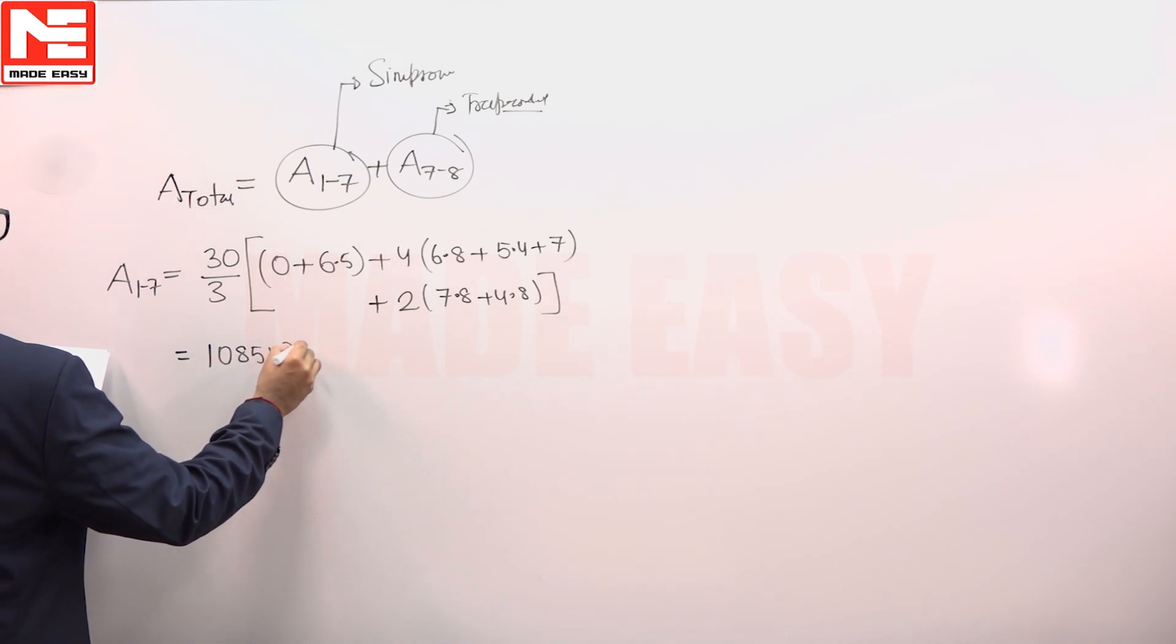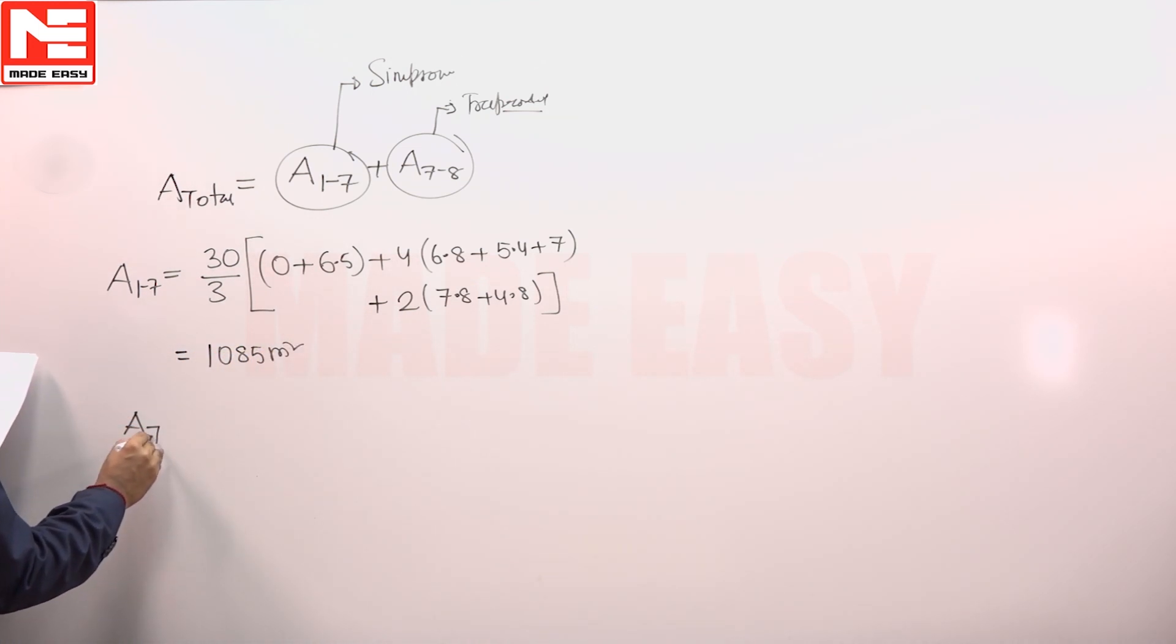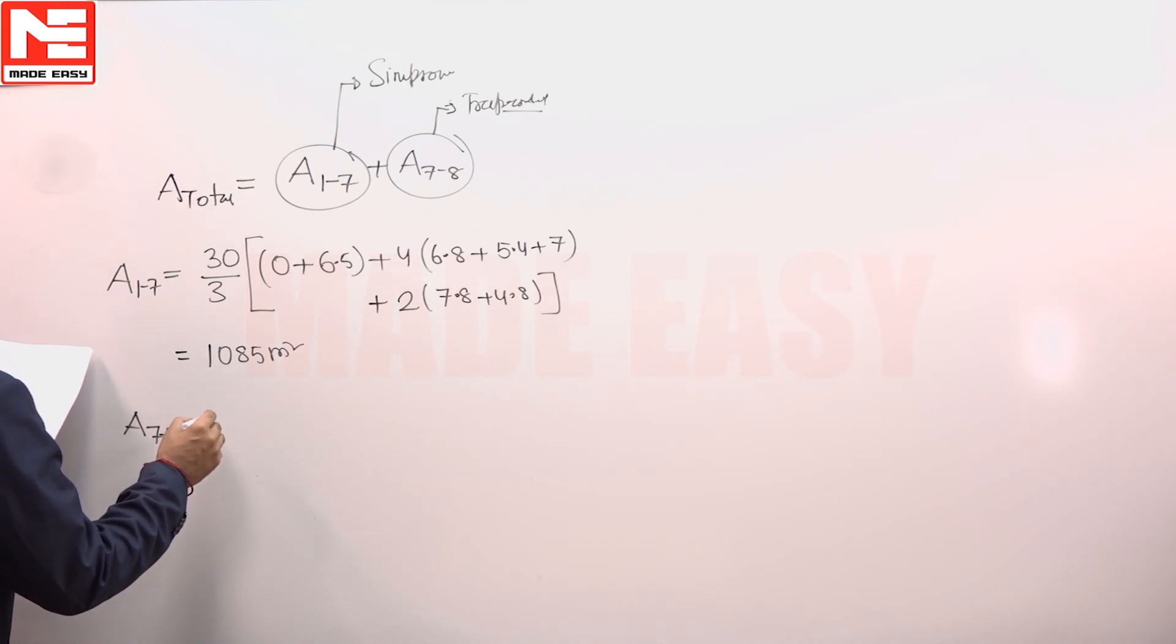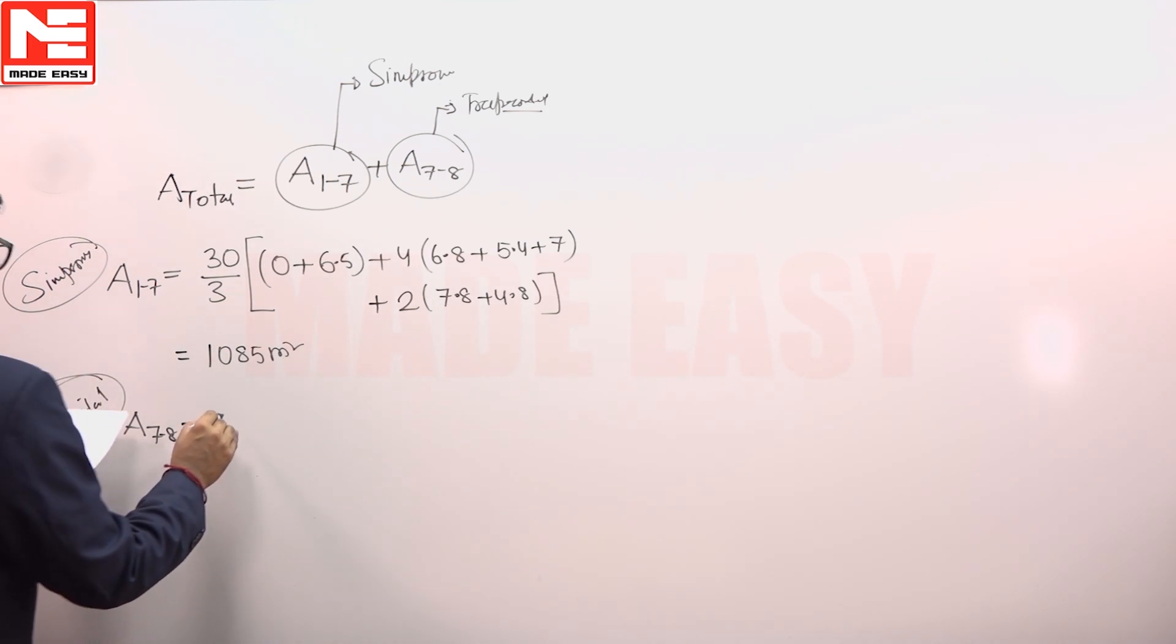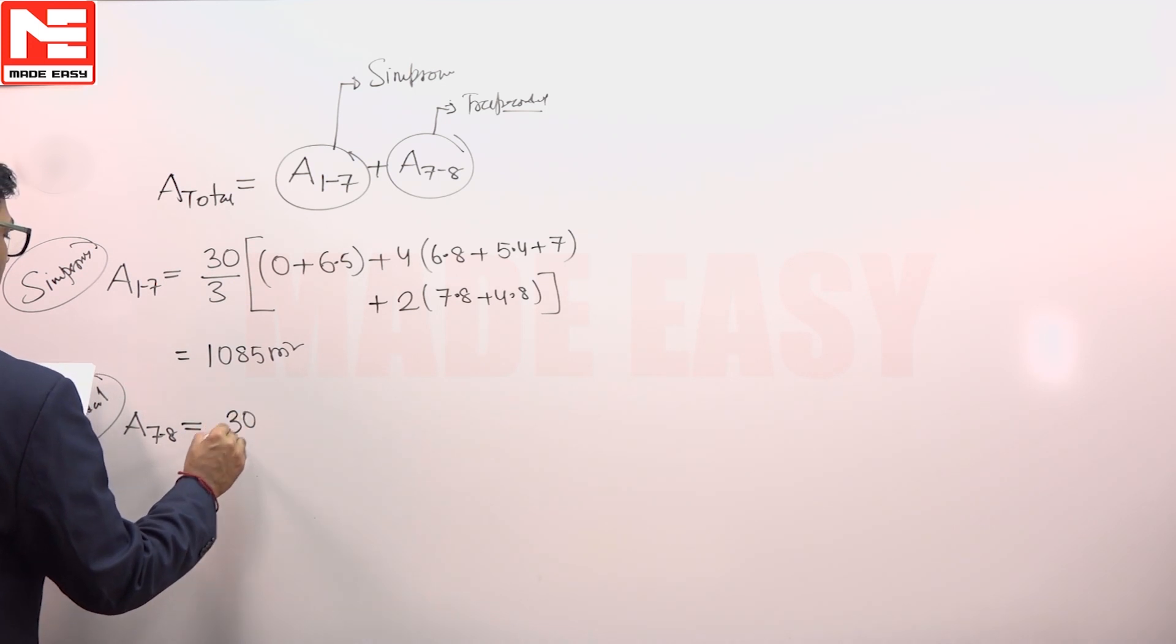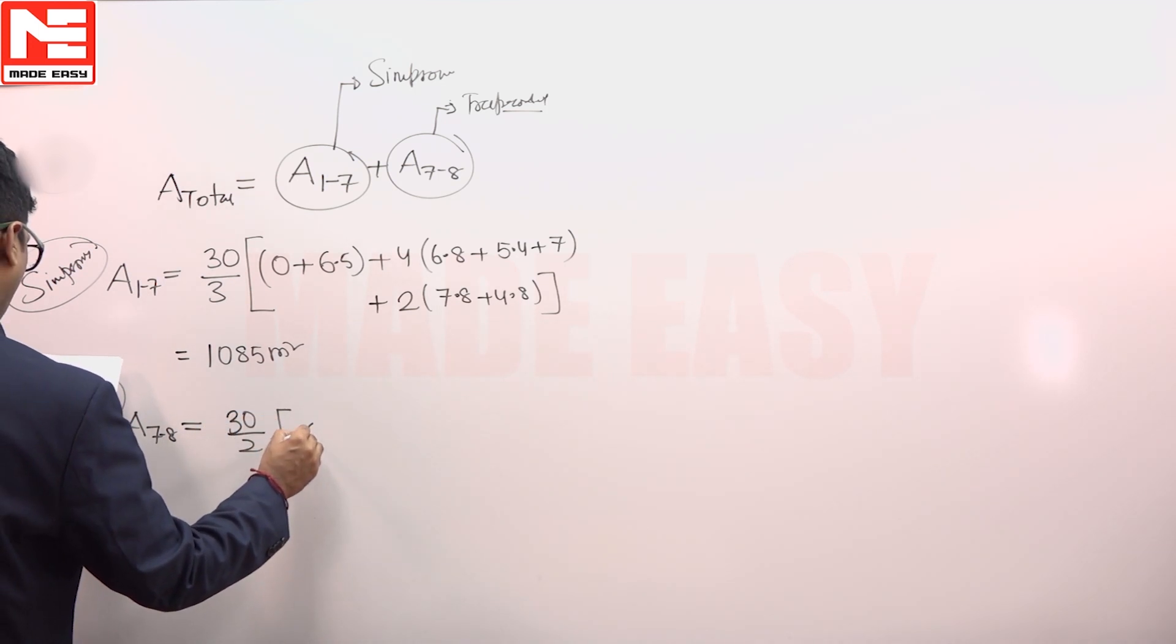And area 7 to 8, last strip area by trapezoidal. So this we have calculated through Simpson's, we are going to calculate this area by trapezoidal. So this is equal to 30 upon 2, plus 6.5 plus 0 upon 2. Already two we have used here.